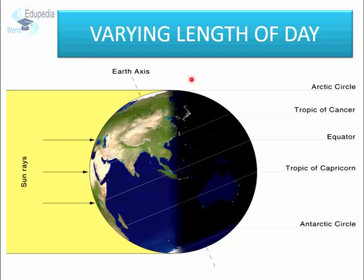Varying Length of Day and Night. As discussed earlier, the variation in the length of days and nights on the Earth's surface is due to the inclined axis. The Circle of Illumination is not always coinciding with the longitudes. This happens only for a short time during a year — only when the overhead sun is on the equator and neither hemisphere is tilted towards or away from the sun. Rest of the times, the circle of illumination does not coincide with the longitudes.